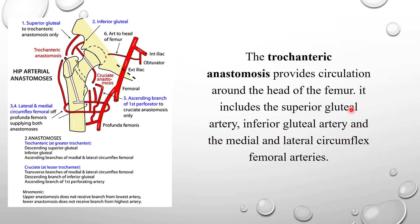In the trochanteric anastomosis, the superior gluteal and inferior gluteal — both branches of the internal iliac — give descending branches, while the medial and lateral circumflex femoral arteries, branches of the profunda femoris and thus the femoral artery, give ascending branches. The cruciate and trochanteric anastomoses are therefore connections between two main arteries: the femoral artery and the internal iliac artery.